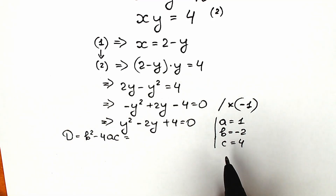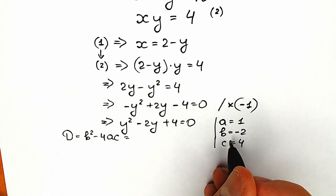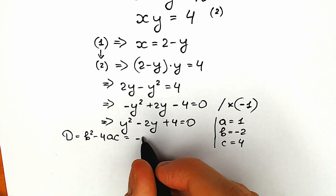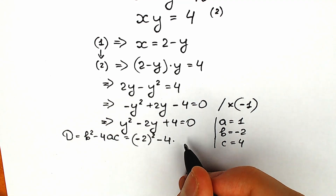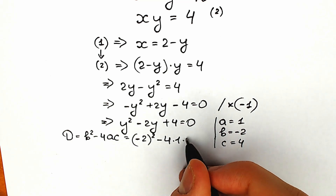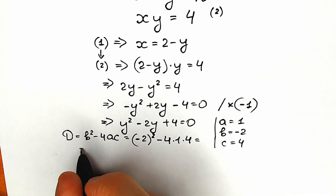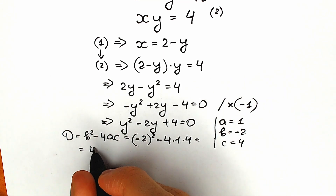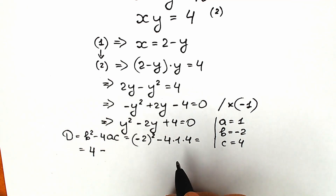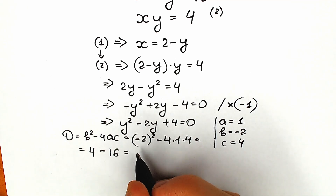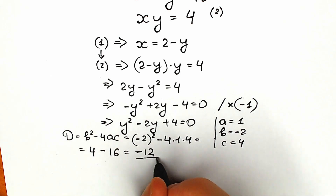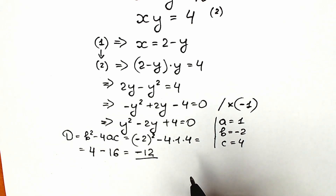Now let's plug these coefficients into the discriminant formula: D equals b squared minus 4ac. So we have (minus 2) squared minus 4 times 1 times 4, which gives 4 minus 16 equals minus 12. Our discriminant is negative.